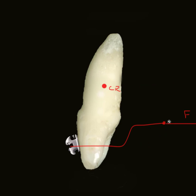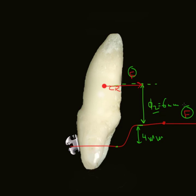Now let's assume we have incorporated a wire that is 4 millimeters away and has a different shape. What happens is the distance, which was 10 millimeters, becomes 6 millimeters, or D2. The same force F is found at the center of resistance, and you will also have a moment given by force F, but this time M2 equals F times D, so M over F equals 6 millimeters.